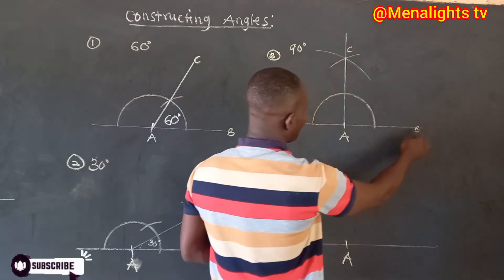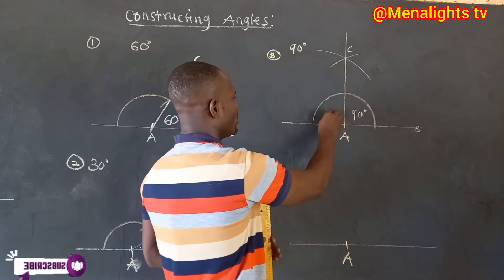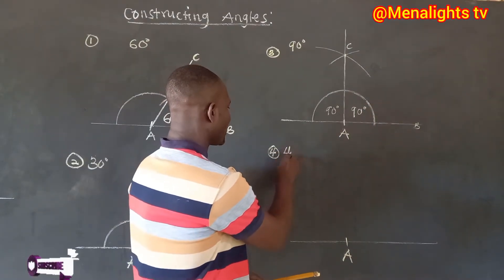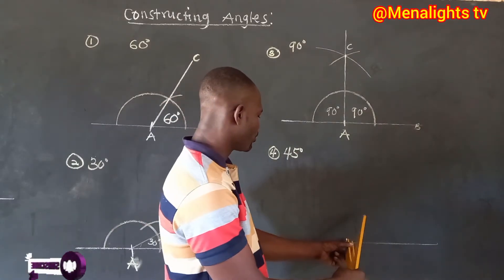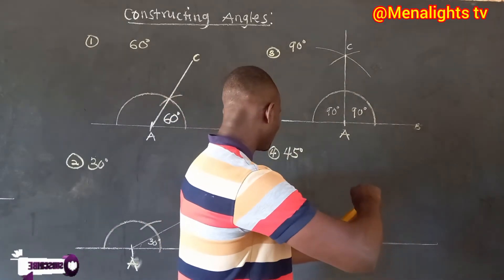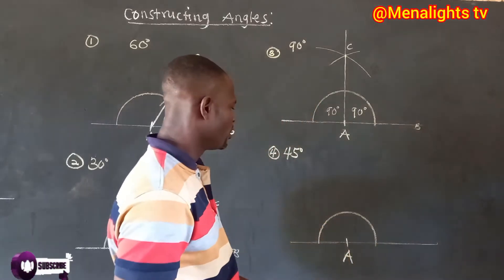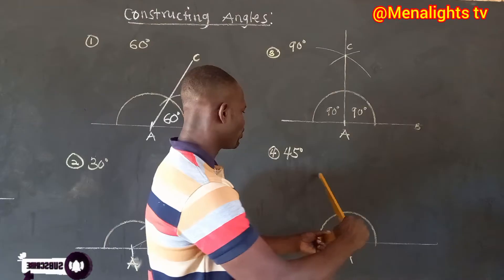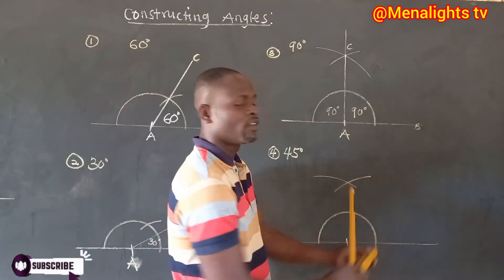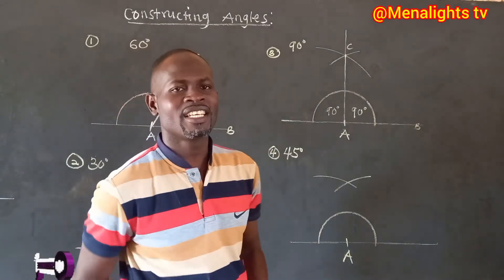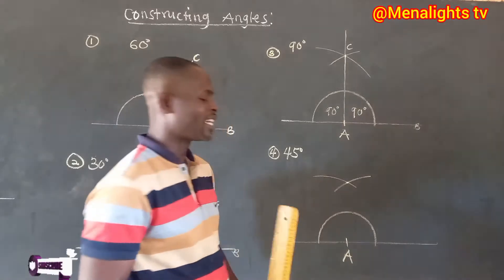The angle BAC is 90 degrees. Now for 45 degrees, you stand here the same way and construct a semi-circle. Then you stand here and make an arc, because to get 45 degrees, first we need to get 90 degrees. So let's get our 90 first.